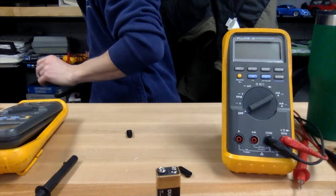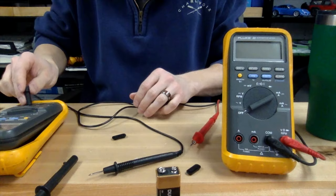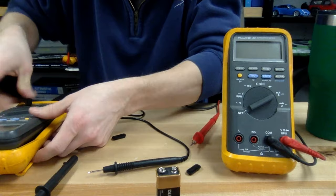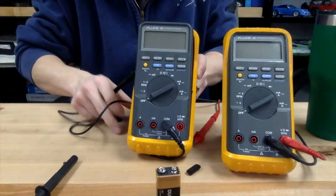You can purchase replacement test leads online. In fact, I'll put a link in the description below. I'm going to check a known good test lead on this meter and verify that the voltage setting is working properly as it should. So let's check that out and see if we fixed our problem.